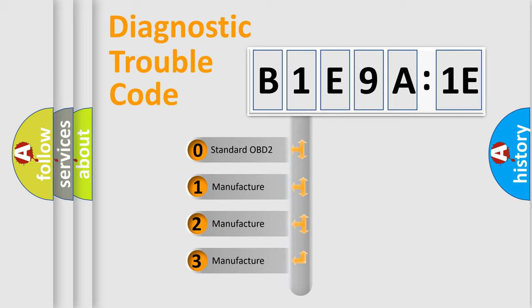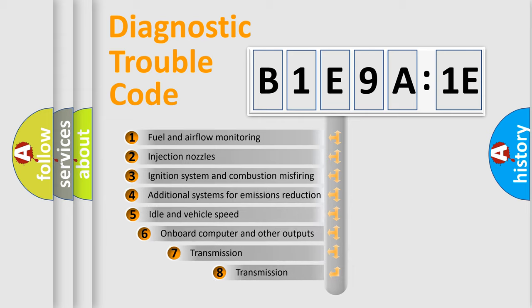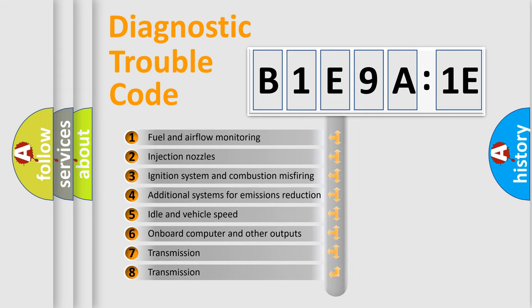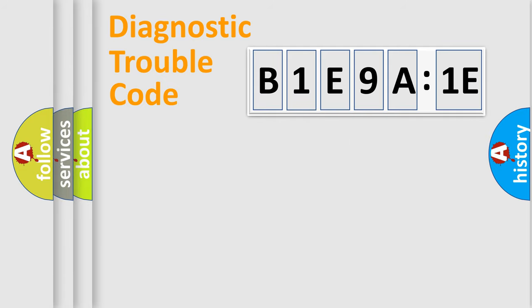If the second character is expressed as zero, it is a standardized error. In the case of numbers 1, 2, or 3, it is a manufacturer-specific error expression. The third character specifies a subset of errors. The distribution shown is valid only for the standardized DTC code. Only the last two characters define the specific fault of the group.